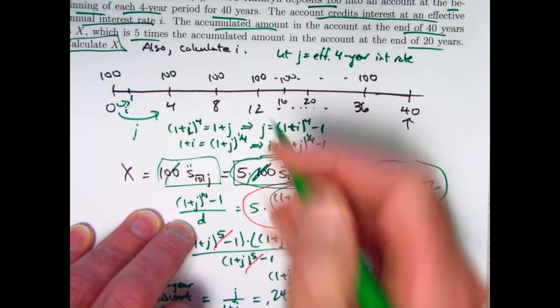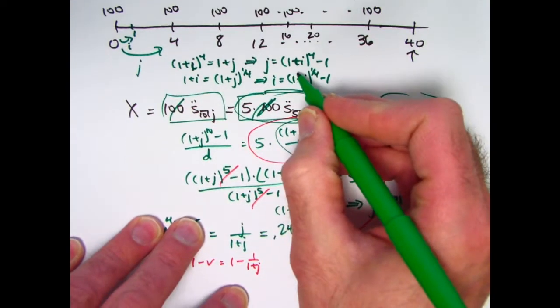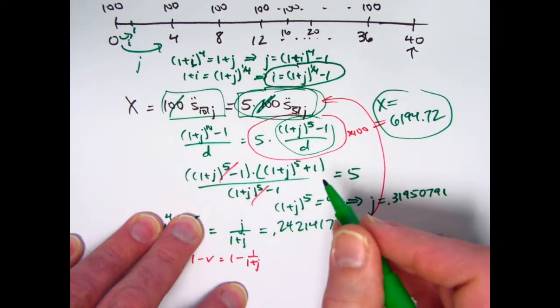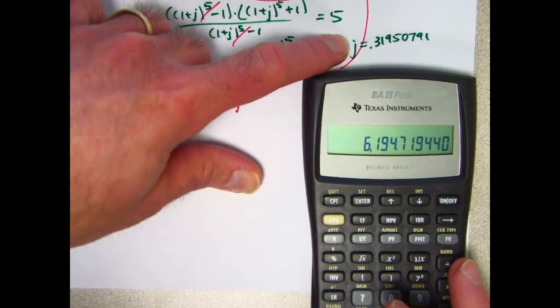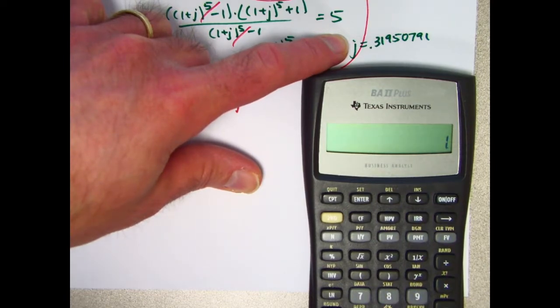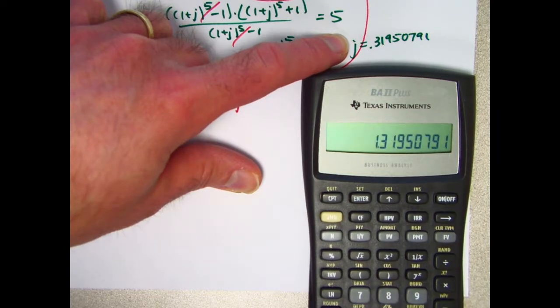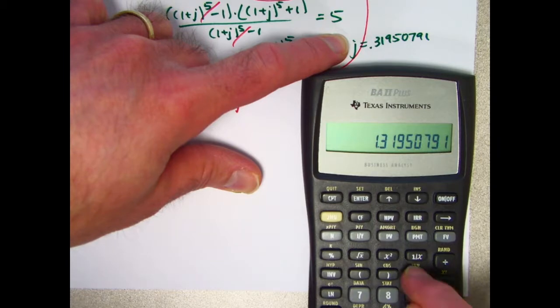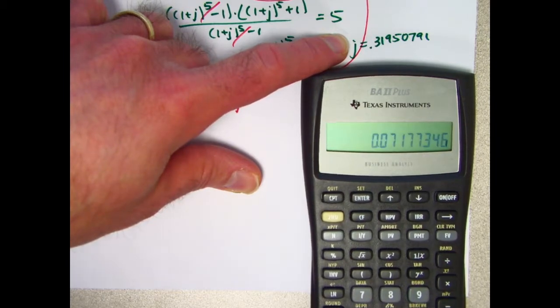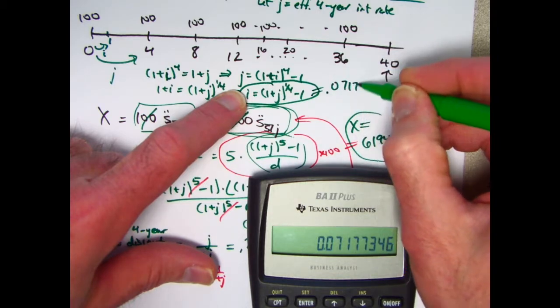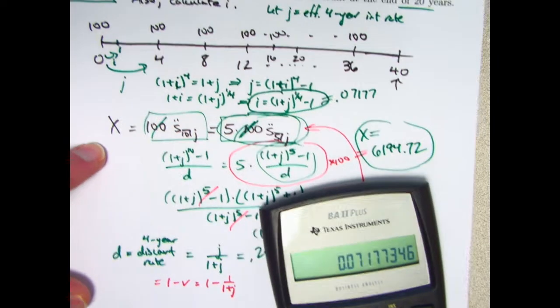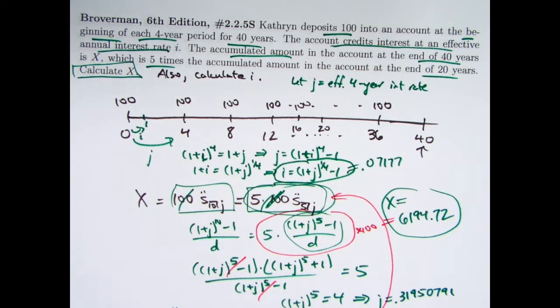Now let me do my extra thing. Let's also calculate i. I can do that from this equation right here. Take (1+j) to the one-fourth and subtract 1. 1.31950791 needs to be raised to the one-fourth power, 0.25 power. Subtract 1. Again, using this equation here to get i, and i is about 0.07177. That's the equivalent effective annual interest rate. It was not asked for, but I decided to put it in there to make it seem more relevant in terms of the fact that the interest rate is being compounded at different intervals than the deposits are being done at.